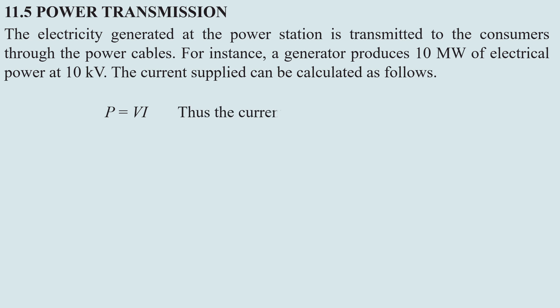Thus the current I is equal to P divided by V. Converting the power of 10 MW into 10 to the power of 6, and the potential difference of 10 kV into 10 to the power of 3.